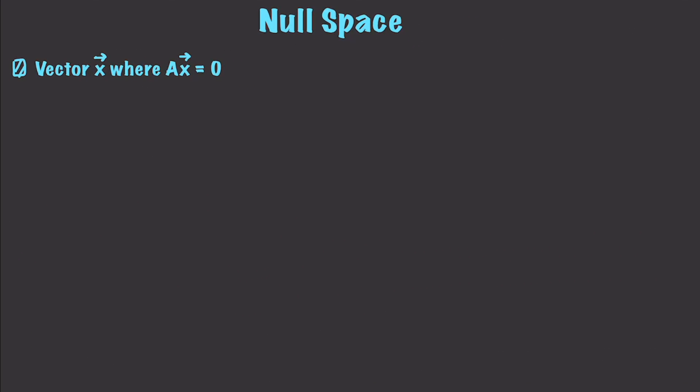We talked about the null space and the column space previously, but I think it is very important to come in and make sure you one hundred percent understand both before we move on. So the null space is just the vector x where when we multiply it times a matrix A, we get a result of zero.